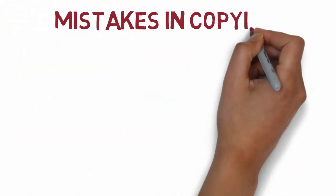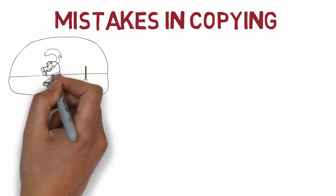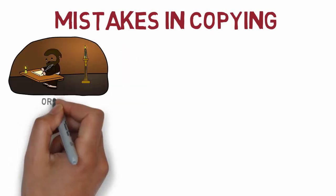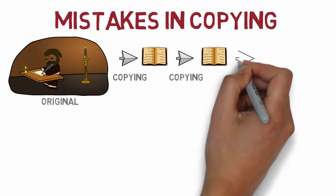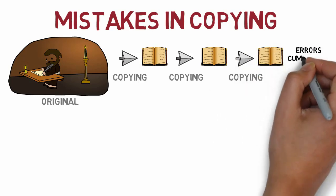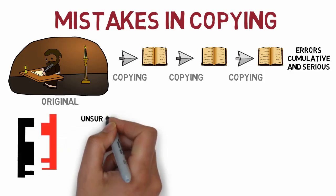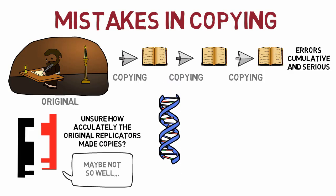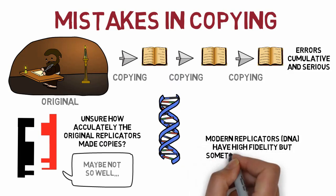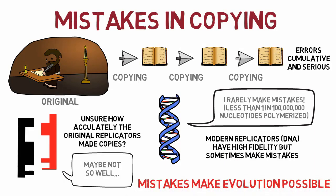With a large population of identical replicators, however, mistakes in the copying process will happen. Like copying books by hand before the invention of the printing press, first-generation mistakes usually do not distort the meaning. However, copying copies of copies of copies then introduces errors that start to become more cumulative and serious. Although we do not know how accurately the original replicator molecules made their copies, modern DNA molecules show high fidelity but sometimes still make mistakes. It is these mistakes that make evolution possible.